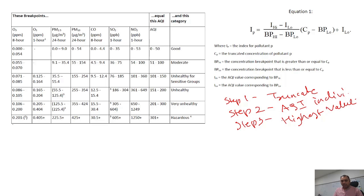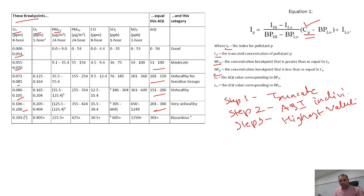Let me explain the formula. IP is what we want to calculate for every pollutant. CP is the truncated value — the reading you get from the sensor. BPHI is the concentration breakpoint that is greater than or equal to CP. You can see the breakpoint table given for every pollutant with certain ranges. Whatever value you get from your sensor must be checked against this table. BPLO is the lower side of the concentration range — for example, 101 is the lower side and 150 is the higher side. IHI and ILO are the AQI values corresponding to BPHI and BPLO respectively.